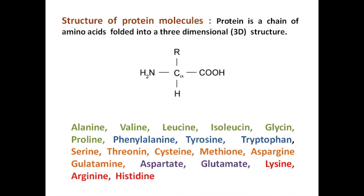phenylalanine, tyrosine, tryptophan, serine, threonine, cysteine, methionine, asparagine, glutamine, aspartate, glutamate, lysine, arginine, and histidine. These are the 20 types of amino acids which are commonly found in proteins.